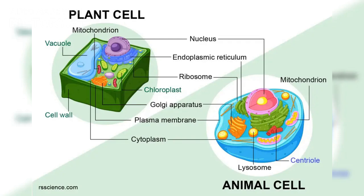Plant and animal cells share many similarities, but their differences are crucial for their distinct functions. Plant cells are designed for photosynthesis and structural support, while animal cells are adapted for flexibility and movement.